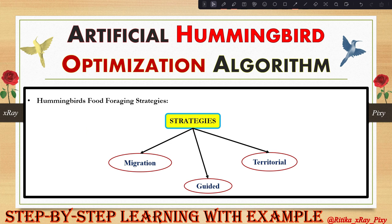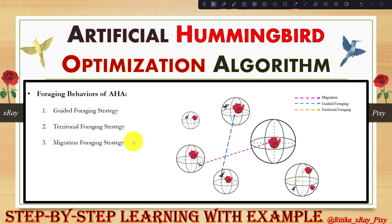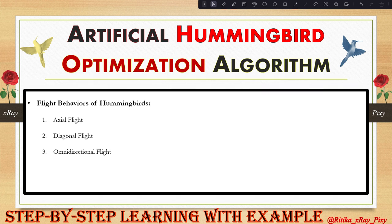Hummingbirds use three different foraging strategies: guided foraging, territorial foraging, and migration foraging. In the Artificial Hummingbird Algorithm, three different mathematical models are used to update the agent's position in the search space, corresponding to the flight skills: axial flight, diagonal flight, and omnidirectional flight.